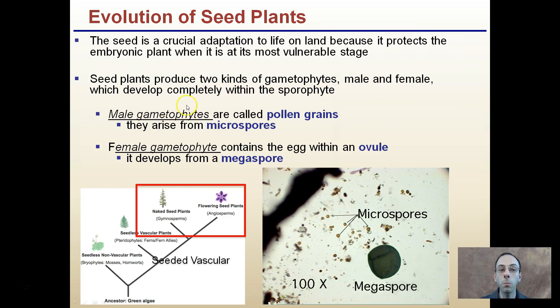The male gametophyte is called the pollen grain, and this gives rise to the microspores. The female gametophyte contains the egg within the ovule, and this develops into the megaspore.